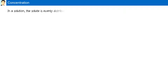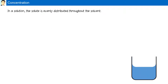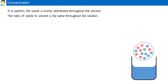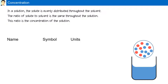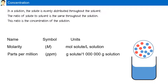Concentration. In a solution, the solute is evenly distributed throughout the solvent. The ratio of solute to solvent is the same throughout the solution. This ratio is known as the concentration of the solution. We will be examining two ways to calculate concentration in a solution: molarity and parts per million.